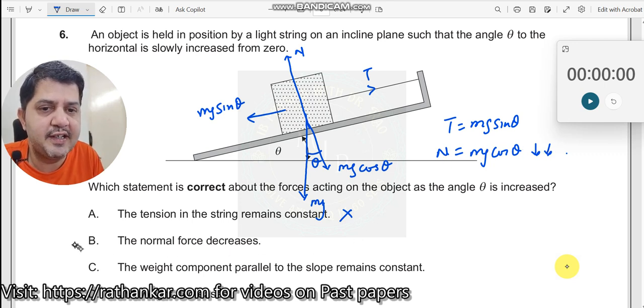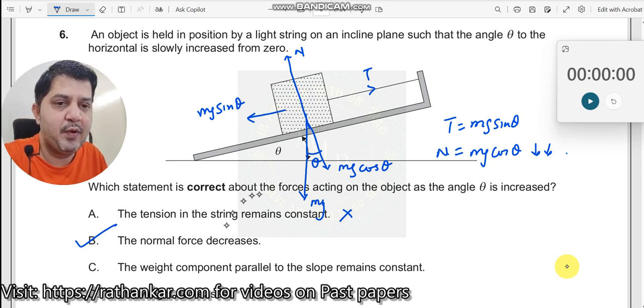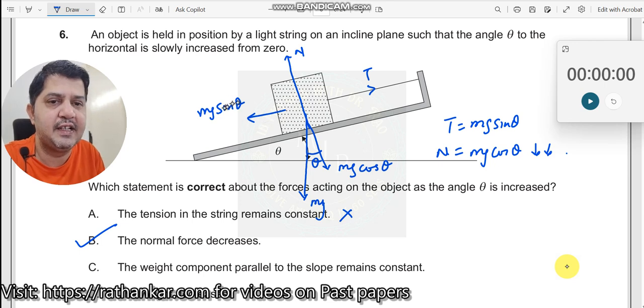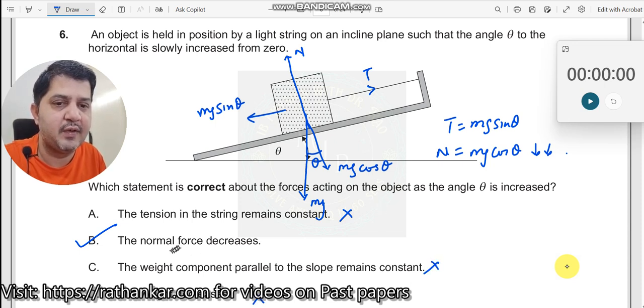Normal force should decrease, so B is the right answer. The rest of them are incorrect. Option C: the weight component parallel to the slope remains constant. No, it does not remain constant because theta is changing. Option D: weight decreases. Weight does not decrease. Mg always remains constant. So these two are also incorrect and only correct one is B.